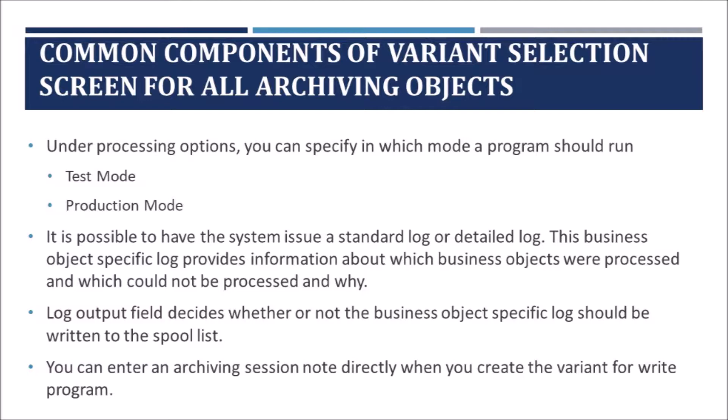This log provides information about which business objects were processed and which could not be processed and why. We also have a log output field, which decides whether the business object specific log should be written to a spool list or not. The last field is the archive session note, where you can enter a note directly when you create the variant for the write program.